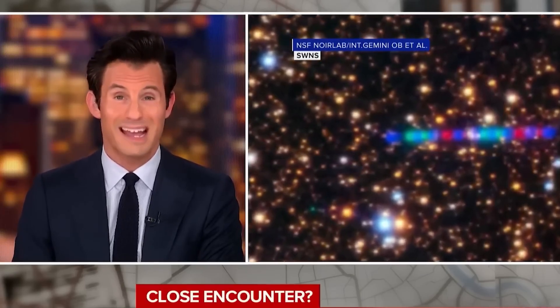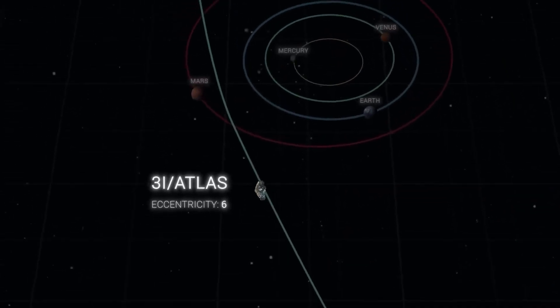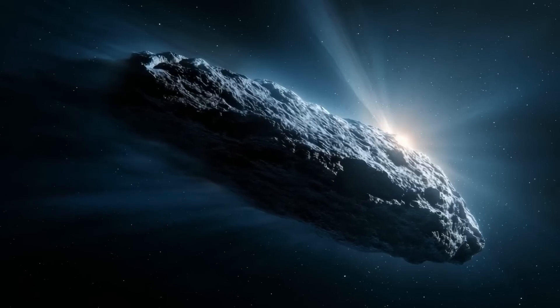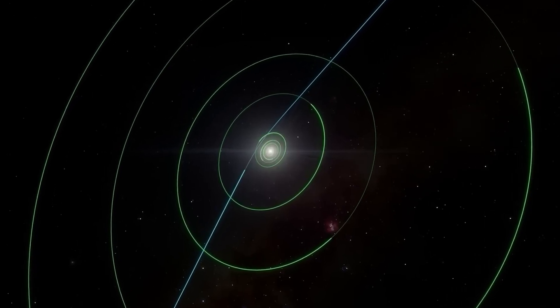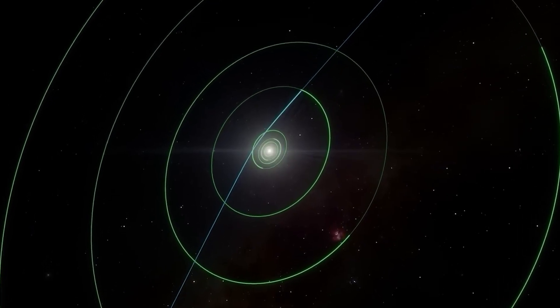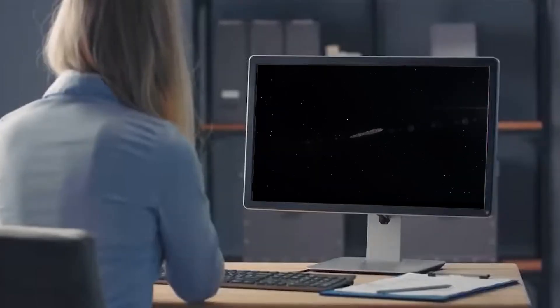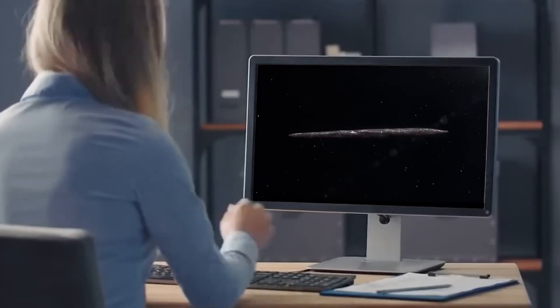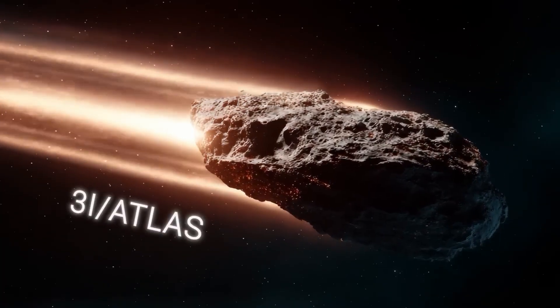To see how strange this is, think of the countless icy fragments that orbit here at home. They fall into predictable families. Short-period comets swing close every few years. Long-period comets can take thousands of years to return, but they still belong to our sun. 3i Atlas tore through those expectations. Nothing in the local solar system could capture or control it.